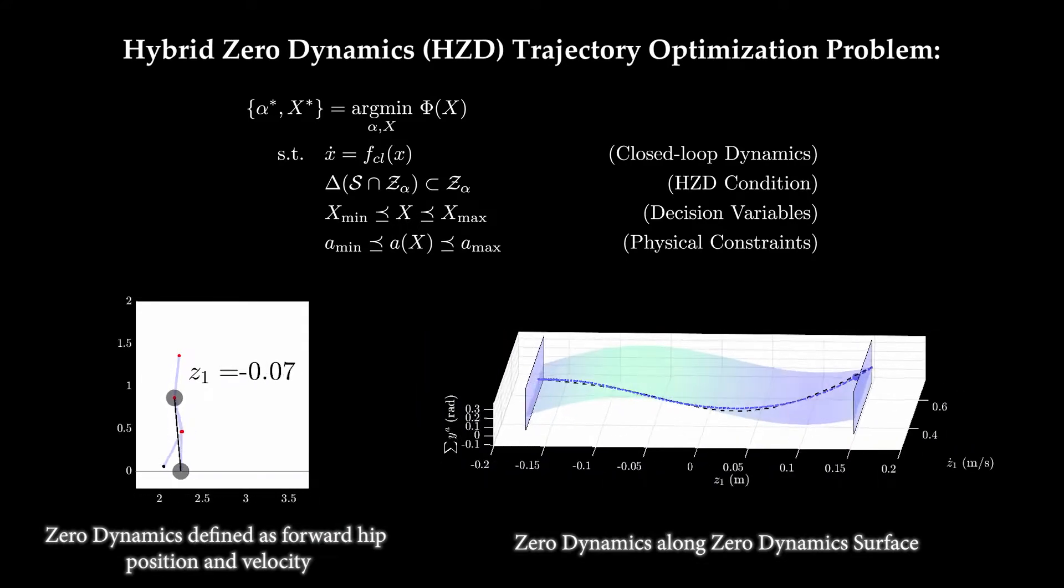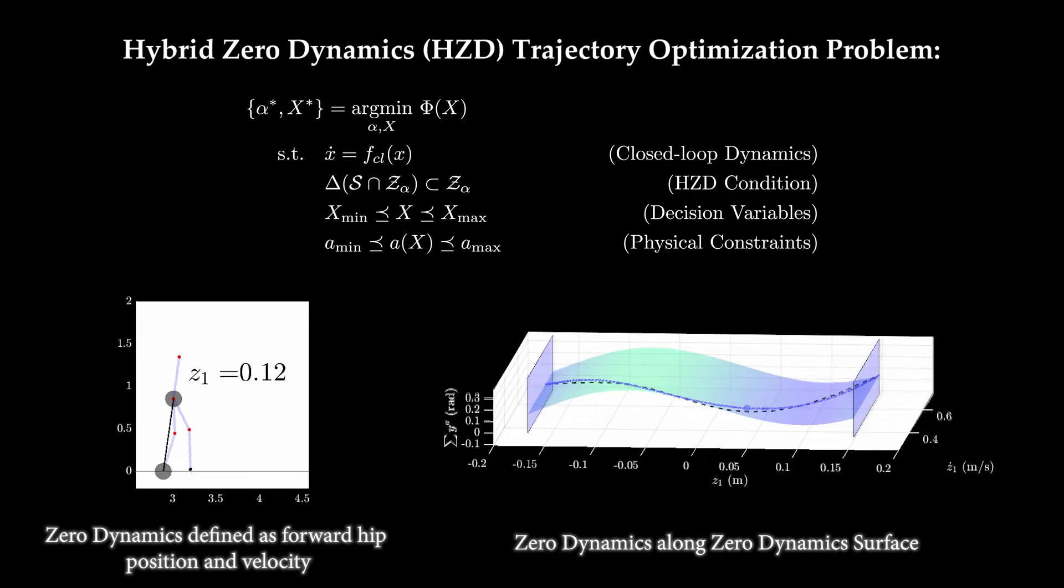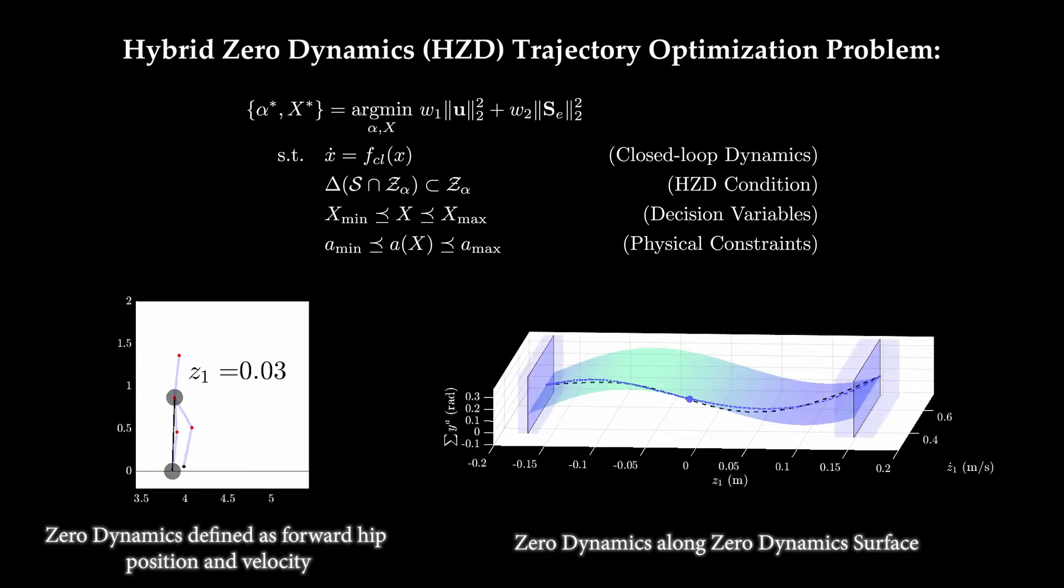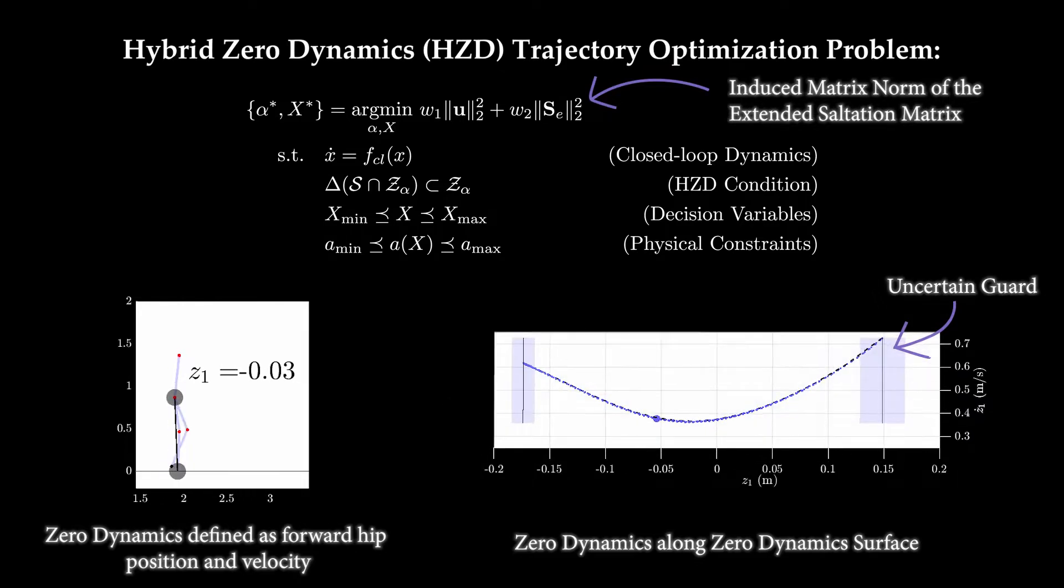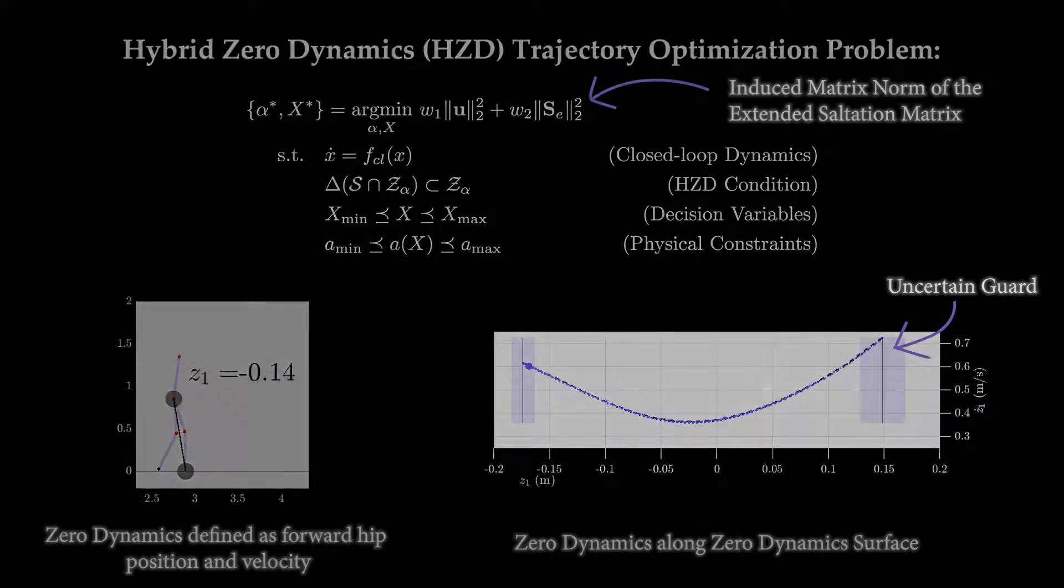However, this method traditionally assumes perfect impact events. Thus, to account for impact and state uncertainties, we propose including the induced norm of the extended saltation matrix into the cost function of the trajectory optimization problem.